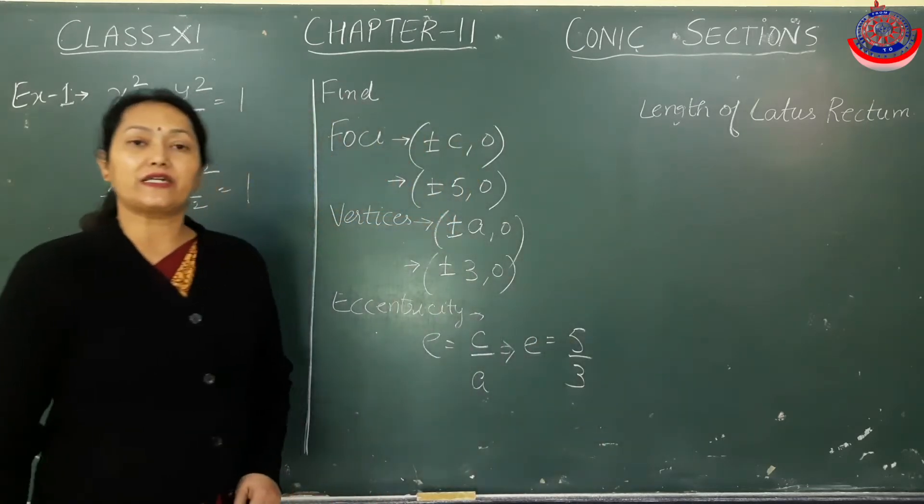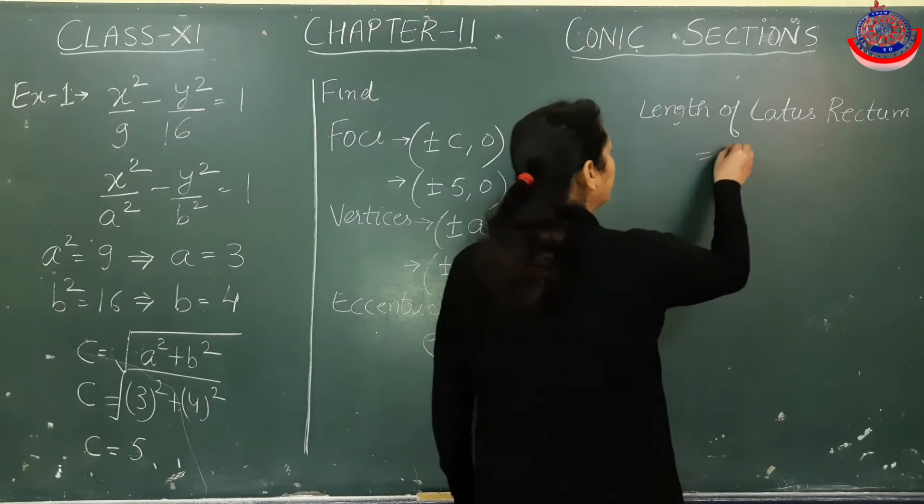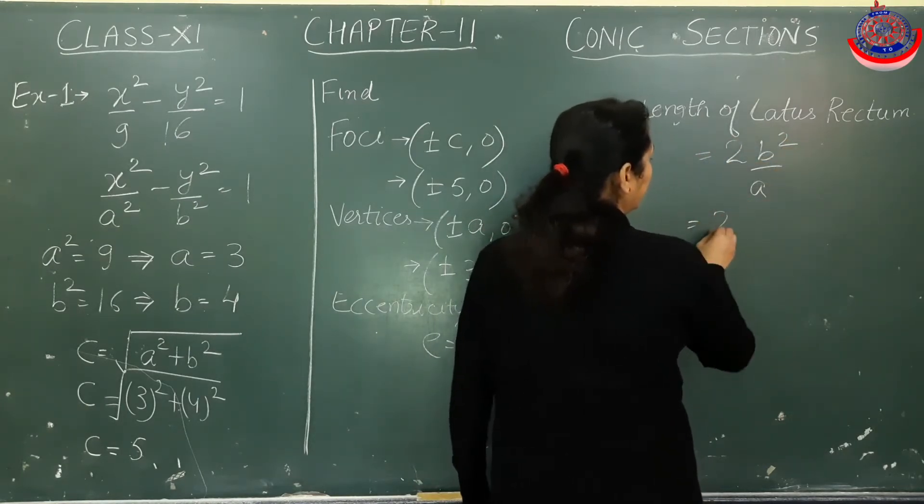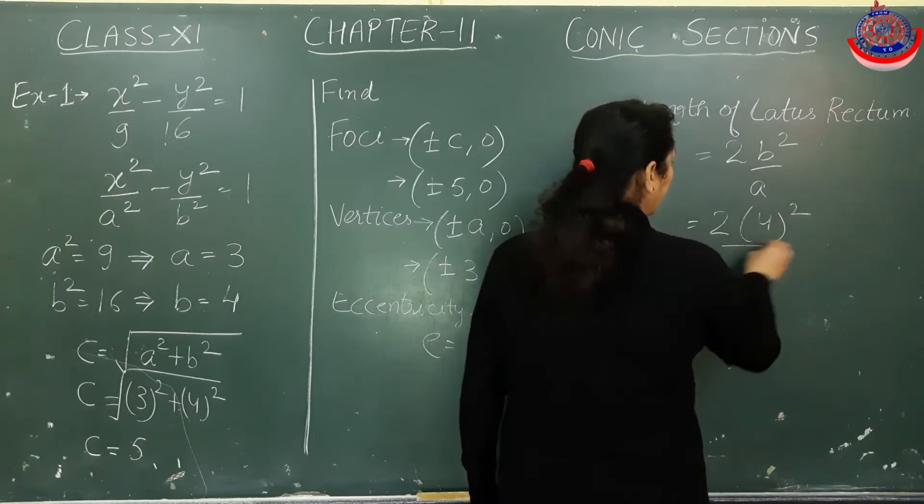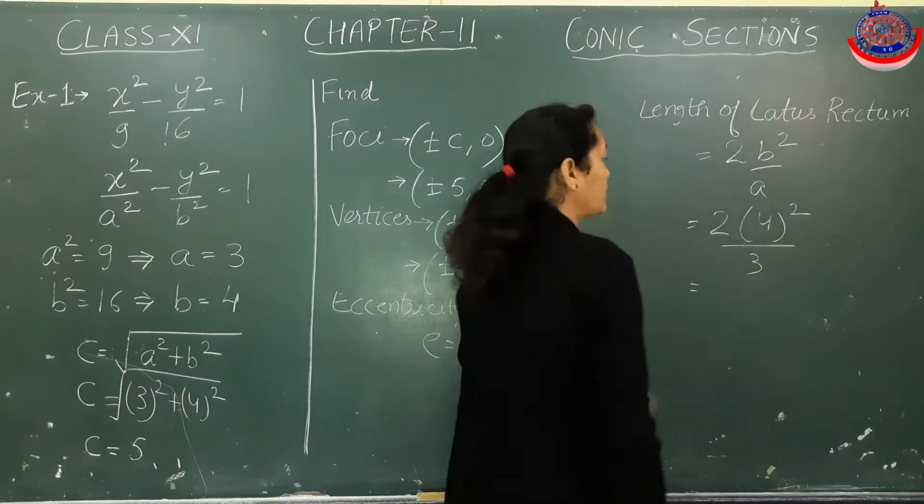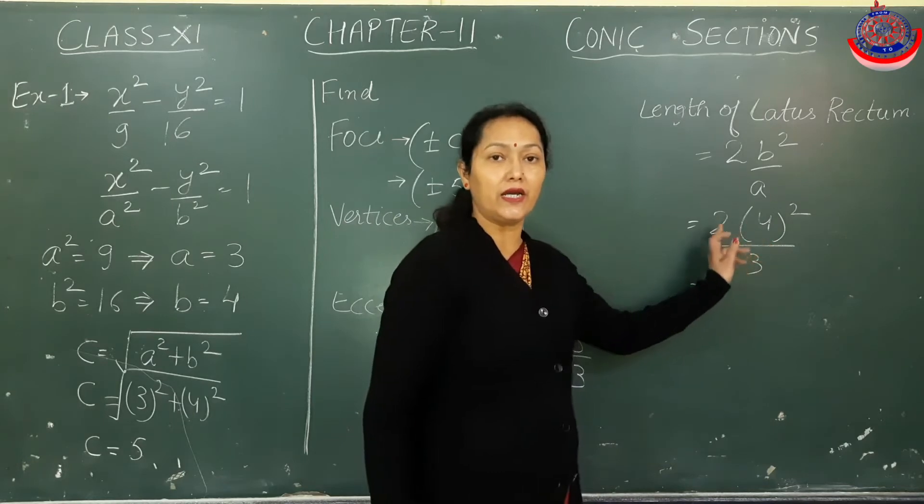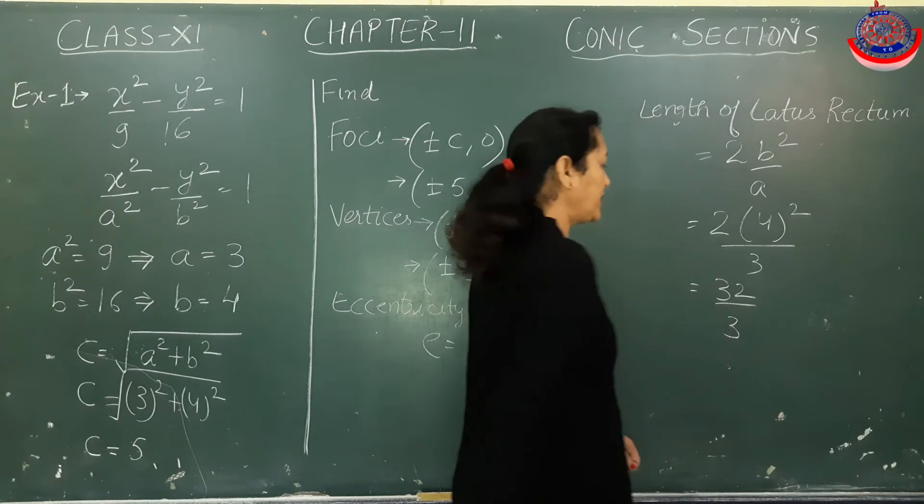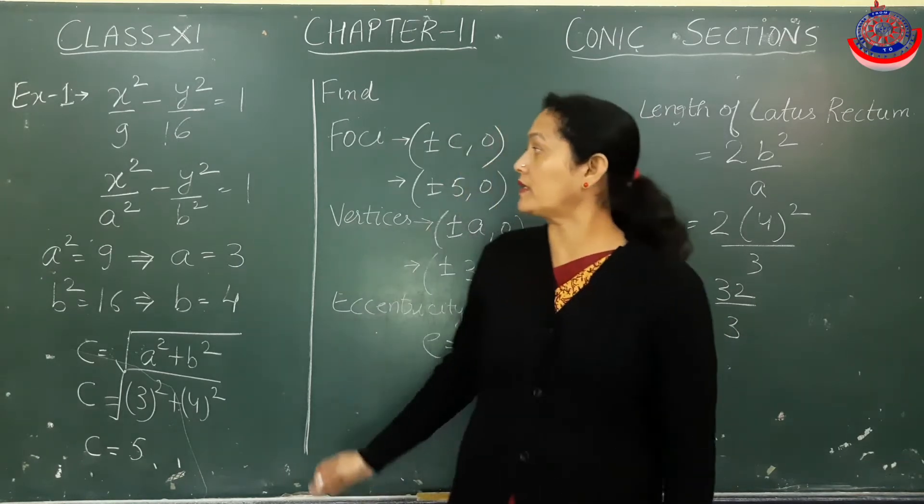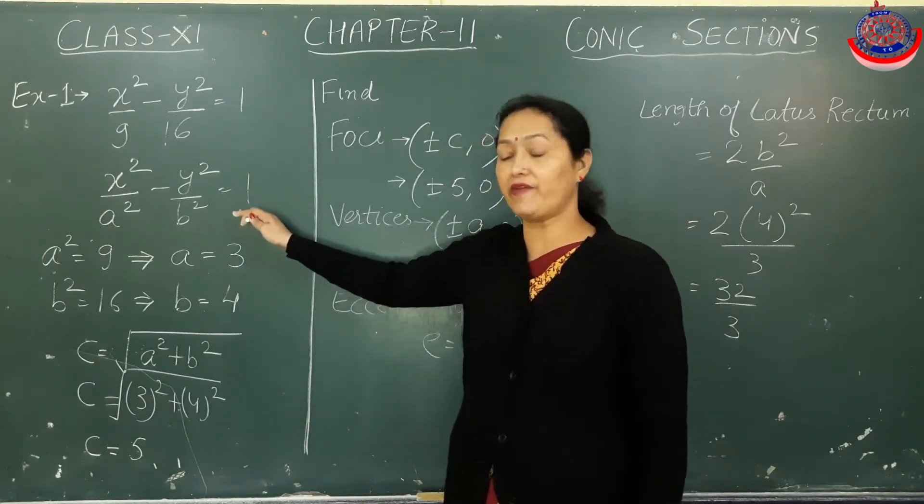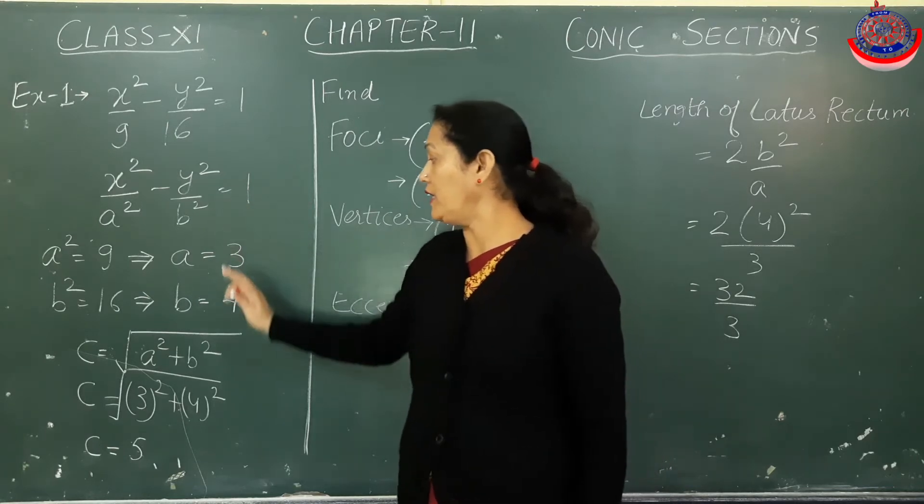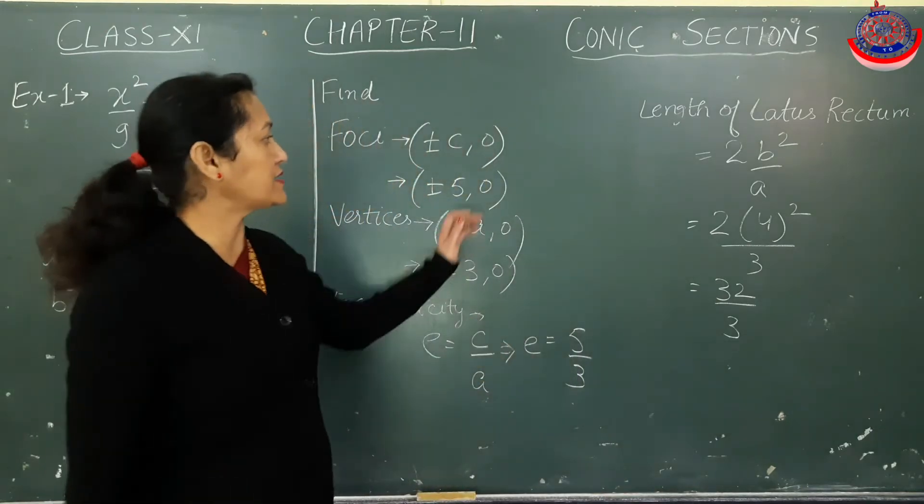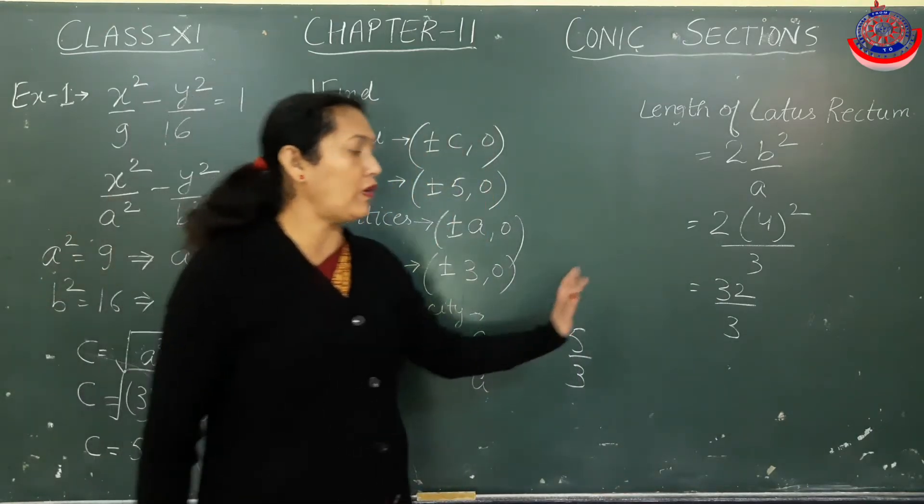Length of latus rectum we have learned is 2b²/a. Here b = 4 and a = 3, so it's 2(16)/3 = 32/3. With the help of the given equation, comparing with standard equation, we obtained a and b. With the help of a and b we obtained c, and then whatever was being asked in the question, we calculated all the values.